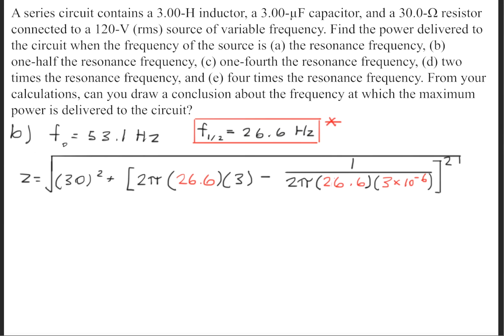So we'll get the resistance squared, and this time, instead of using 53.1, we'll be using 26.6 Hertz for the frequency. This will give us an impedance of 1494.6 Ohms.